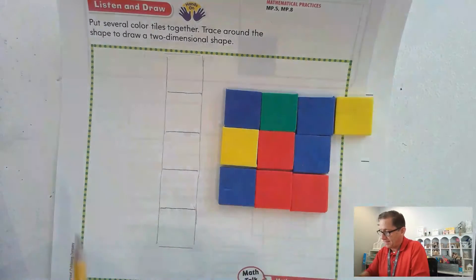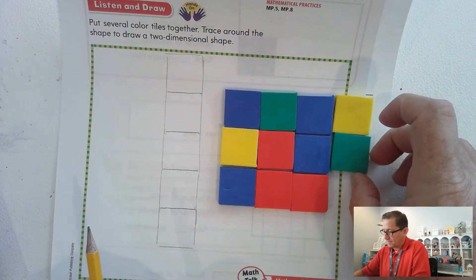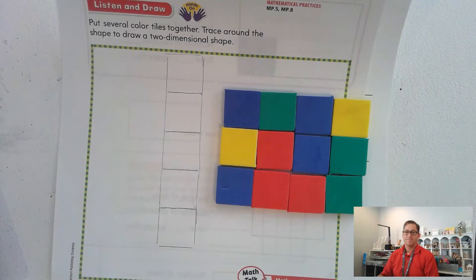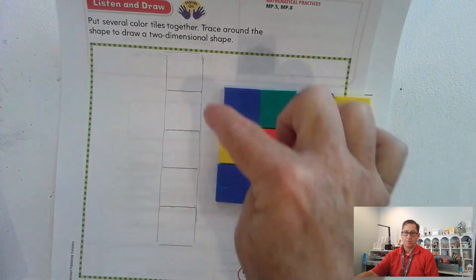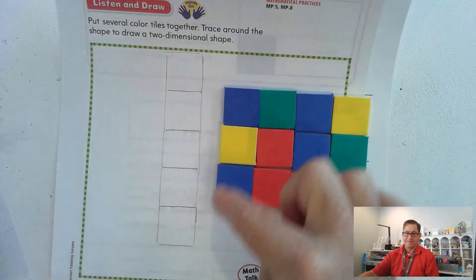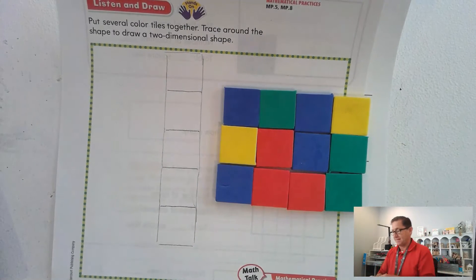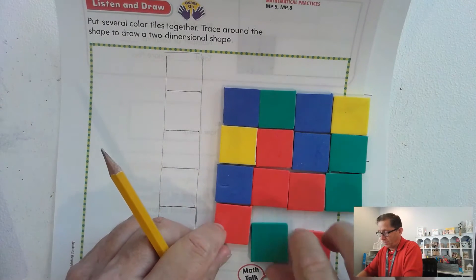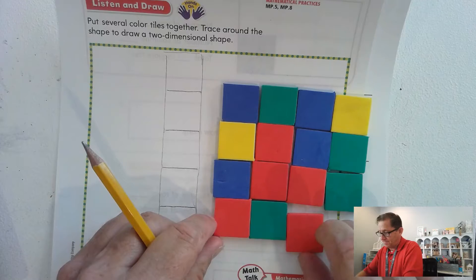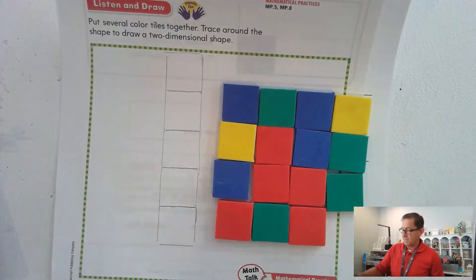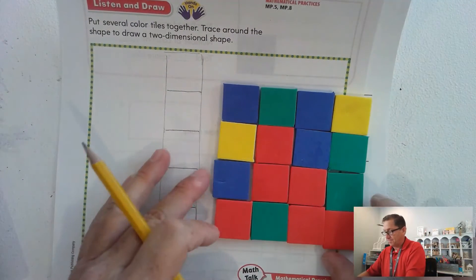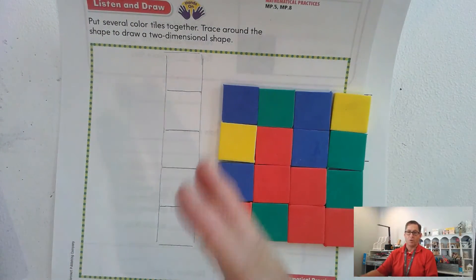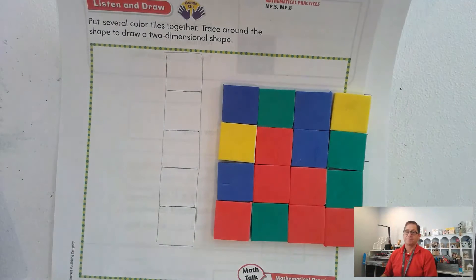What if I had something like this? Three rows of four. Would that be a square? No, now it's longer, right? This way than it is this way. So I'd have to add another row of four to make the square. So now we have four rows of four. So we have equal sides.